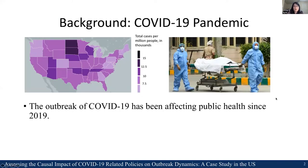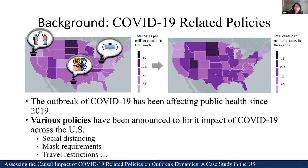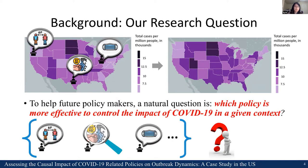Let's start with the background. COVID-19 has been affecting public health since 2019, and during the past few years there have been various policies announced by governments to limit the impact of COVID-19 across the U.S., such as social distancing, mask requirements, and travel restrictions. To help future policymakers, a natural question is which policy is more effective to control the impact of COVID-19 in a given context.